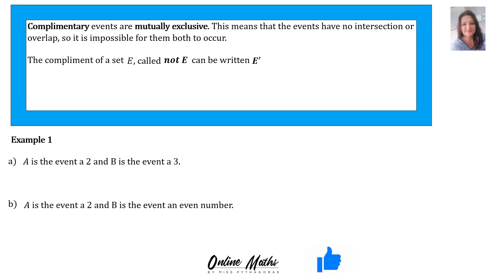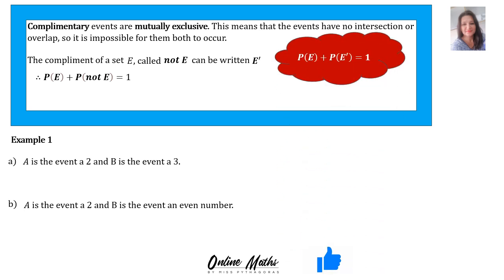Now we look at something called complementary events. They are mutually exclusive, meaning the events have no intersection or overlap, so it is impossible for them both to occur. The complement of set E, called NOT E, can be written as E complement — there is a little dash on the right-hand side of the E. The formula is: P(E) plus P(NOT E) is equal to 1, or equivalently P(E) plus P(E complement) equals 1. That formula is not on the formula sheet, so you must remember it. You can also rearrange it to make P(E) the subject.